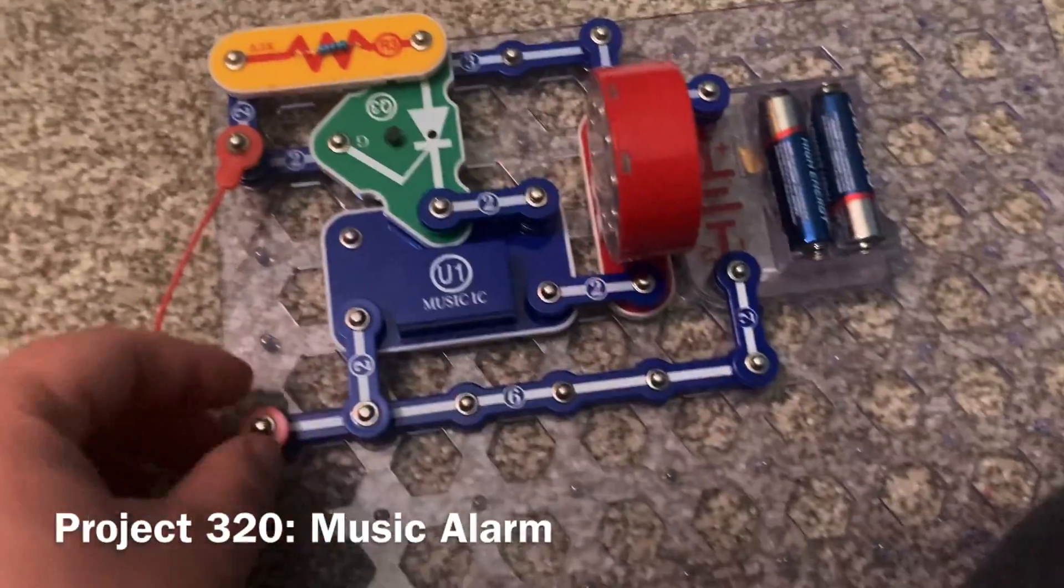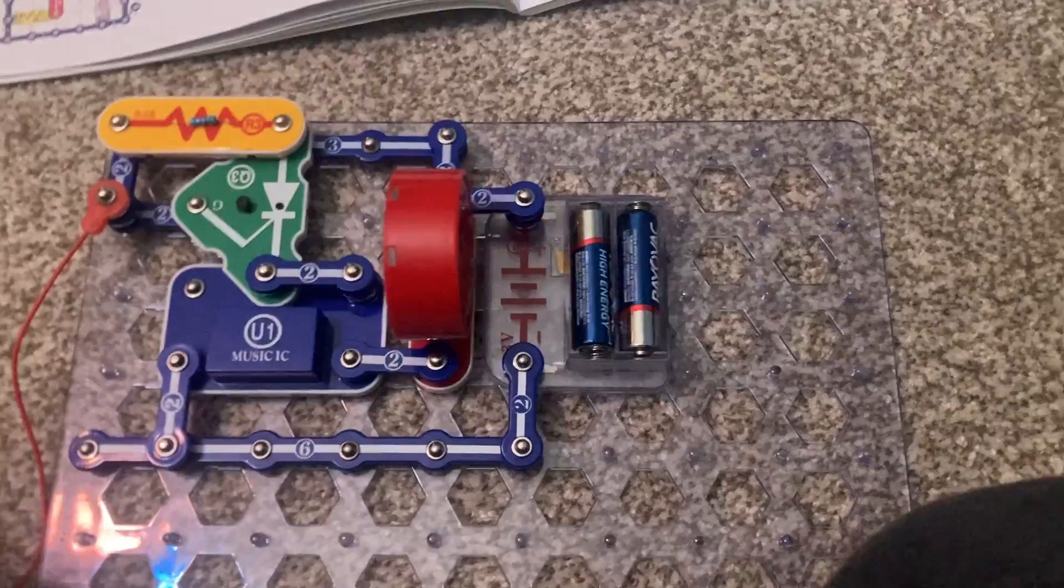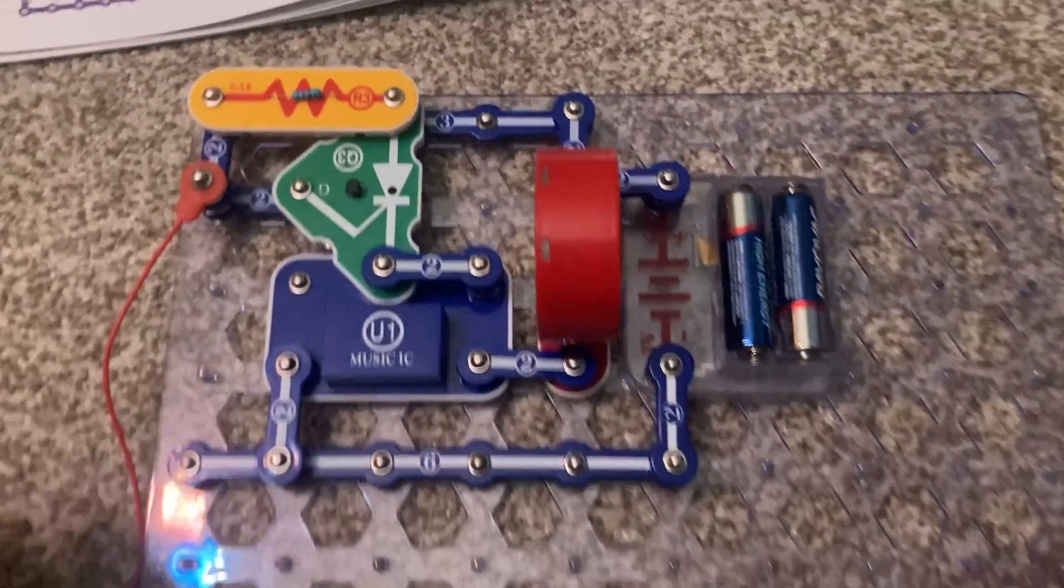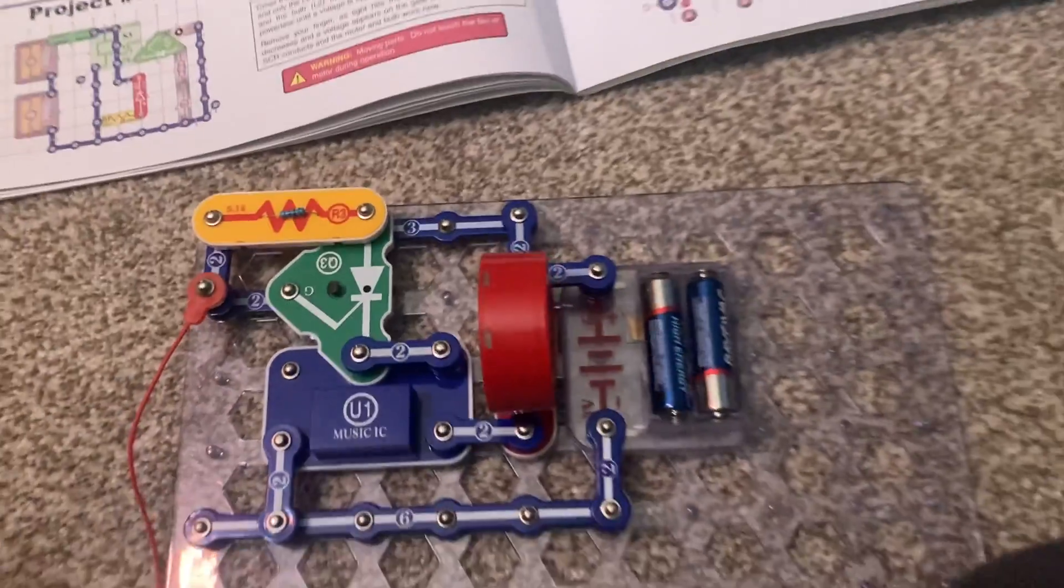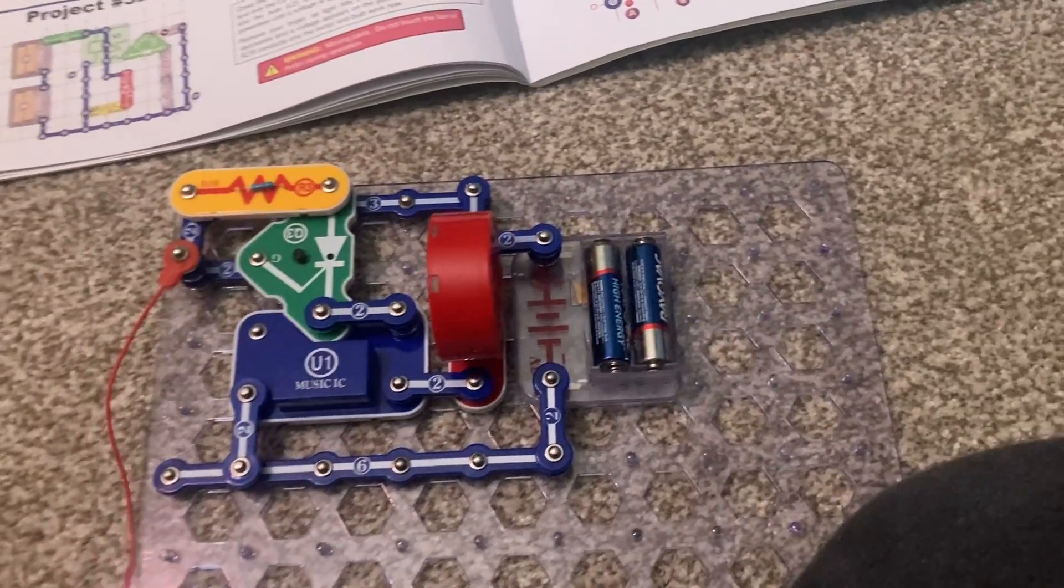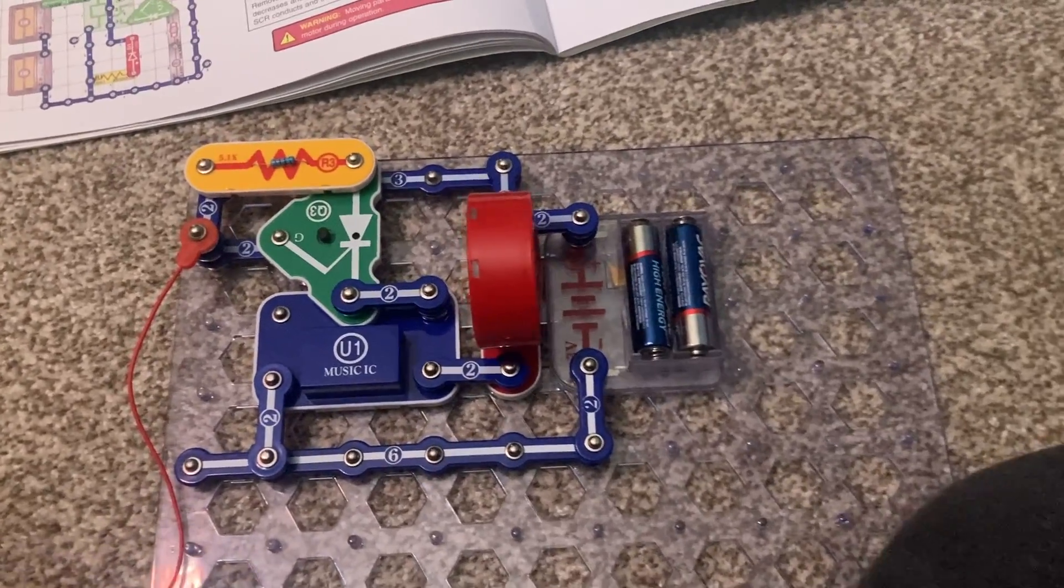When I remove one end of the red jumper wire from the circuit, the happy birthday song plays. This is a music alarm in which you could use a longer wire and run it like across the doorway or wherever so that if an intruder removed or cut the wire, music would play. But this would just be for demonstration purposes only.